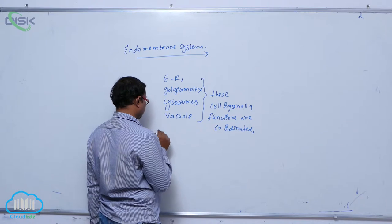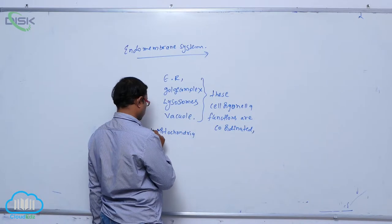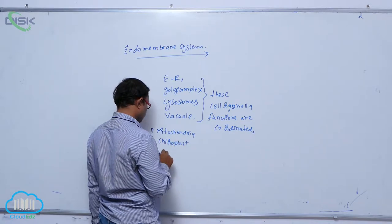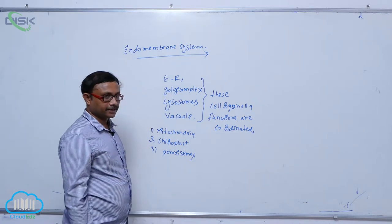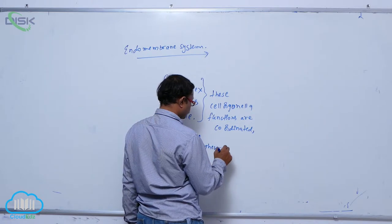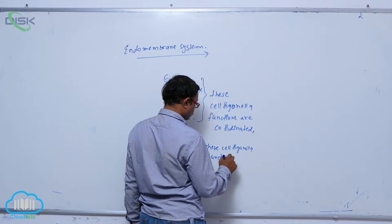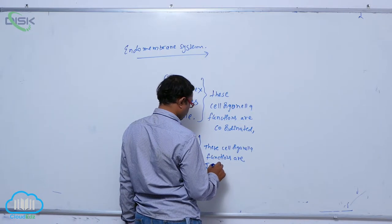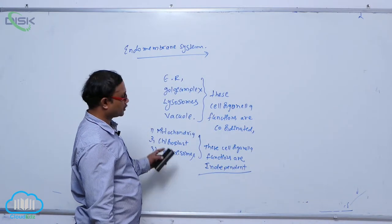In other cellular organelles — mitochondria, chloroplasts, and peroxisomes — the functions are not coordinated; their functions are independent. That is known as the endomembrane system.